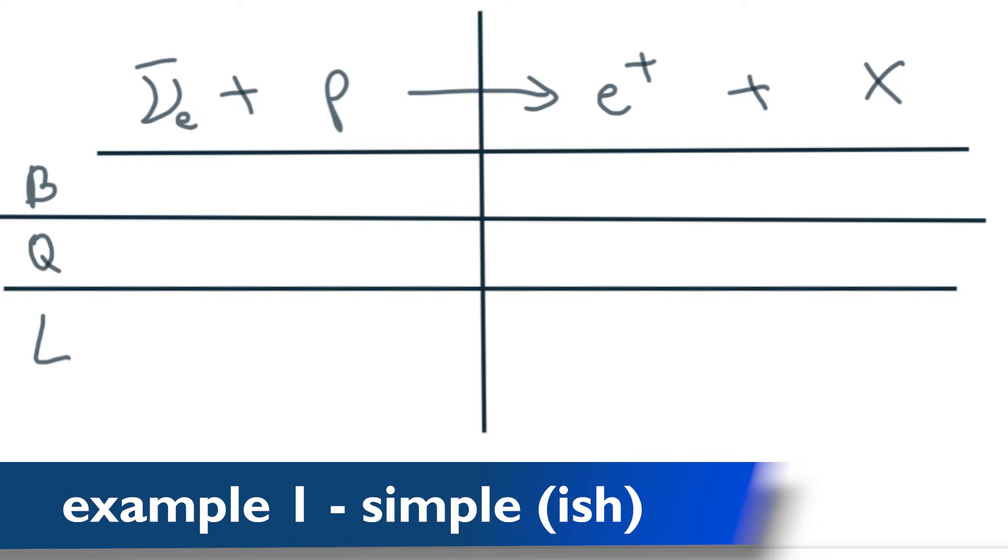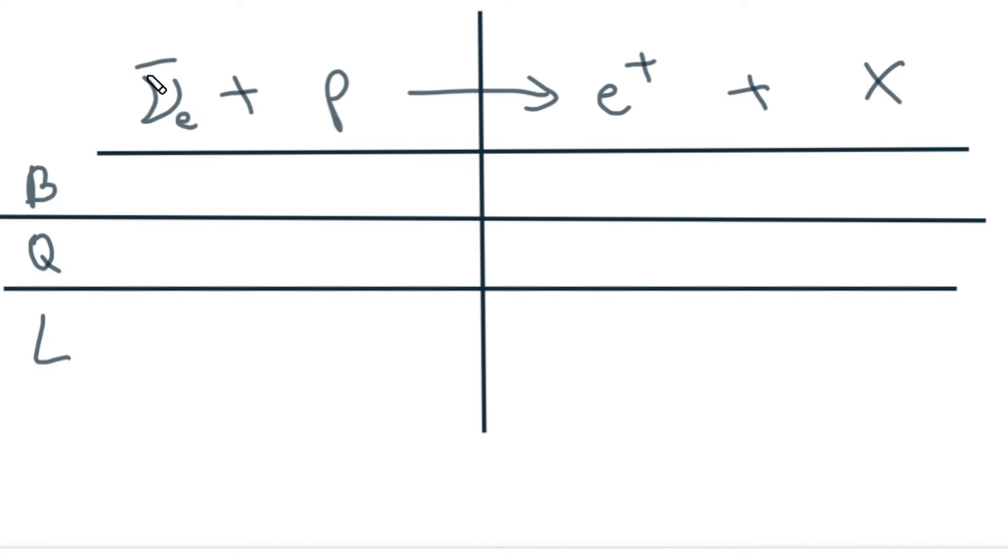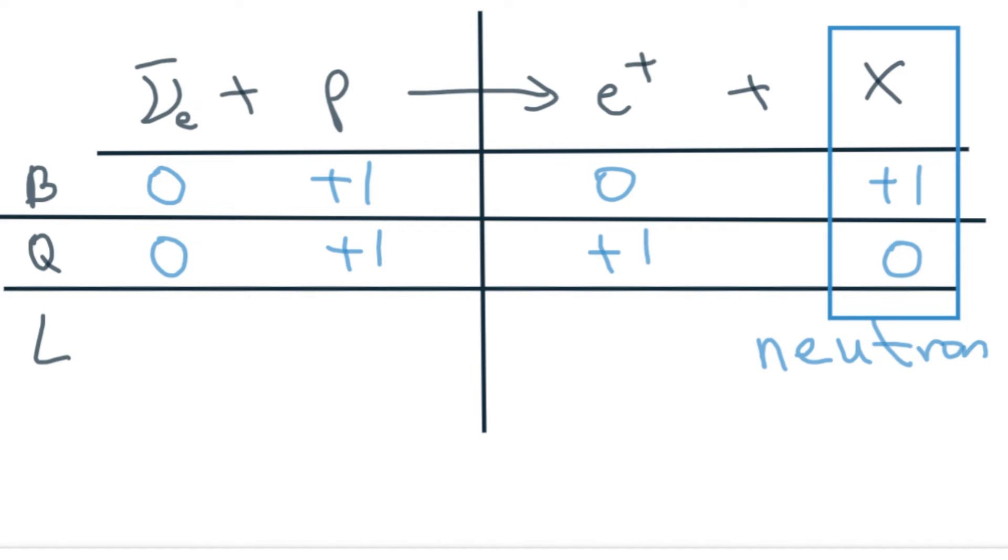Our first example of how to use these numbers is looking at an anti-electron neutrino interacting with a proton to create a positron and a mystery particle. So baryon number first - a neutrino has a baryon number of zero, proton is plus one, positron is zero, so our mystery particle must be plus one. Taking the charge, all neutrinos have no charge, proton is plus one, positron is plus one, which means our mystery particle is zero. We now have enough information - it's a baryon made of three quarks and it's neutral. The only one we know is the neutron.